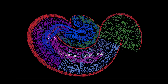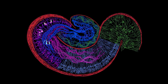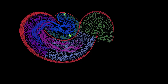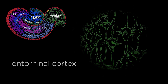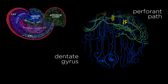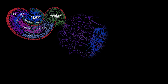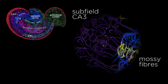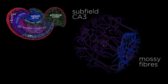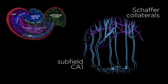From there, the signal travels along the CA3 pyramidal cell axons, collectively called Schaffer collaterals, to the CA1 subfield. To summarize, an incoming signal travels through the hippocampal regions in this order: from the pyramidal cells in the entorhinal cortex, along the perforant path axon fibers, to the dentate gyrus; from the granule cells in the dentate gyrus, along the mossy fibers, to subfield CA3; and finally, from the pyramidal cells of subfield CA3, along the Schaffer collaterals, to the pyramidal cells of subfield CA1.